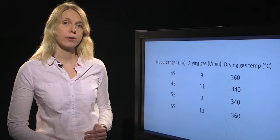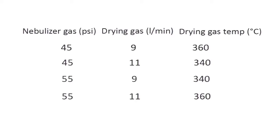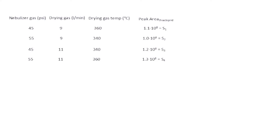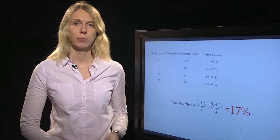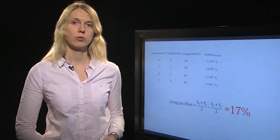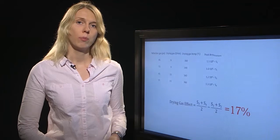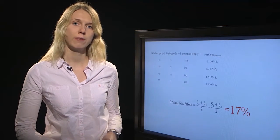We can do the same for drying gas by reorganizing this table so that we have also two measurements for the low drying gas flow rate and two measurements for the high drying gas flow rate. Similarly, we can calculate the effect of drying gas by comparing the results obtained for the high drying gas flow rate and for the low drying gas flow rate. In this case, we observe a remarkable effect of 17%, which is significantly higher than our repeatability limit. This means that drying gas variation will probably influence our robustness significantly and we have to pay specific attention to this parameter.